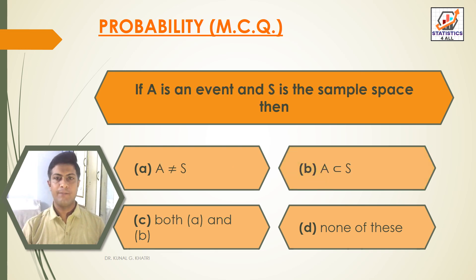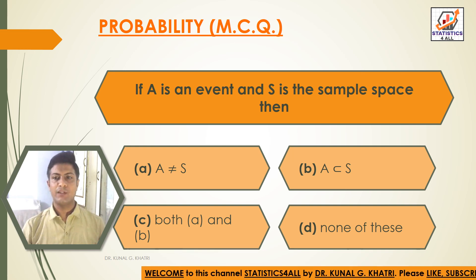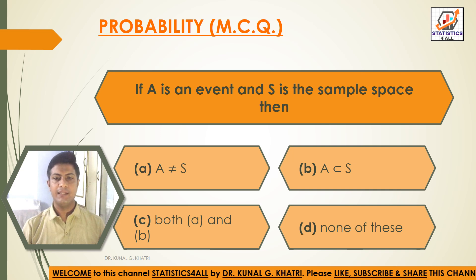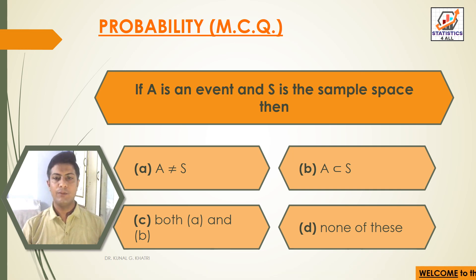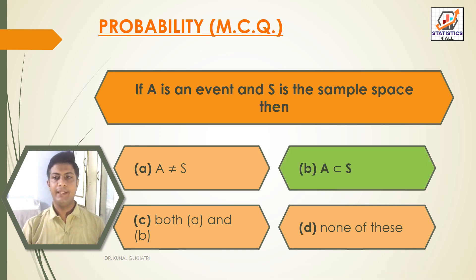Next question: if A is an event and S is the sample space, then — Option A: A is not equal to S. Option B: A is a subset of S. Option C: both A and B. Option D: none of these. The answer is Option B — A is a subset of S.